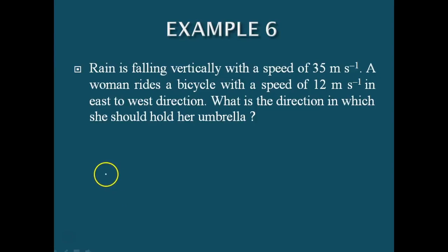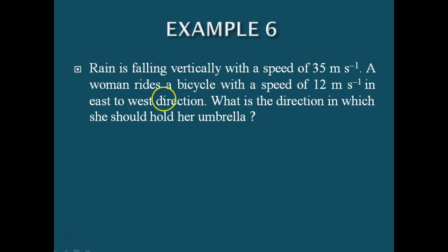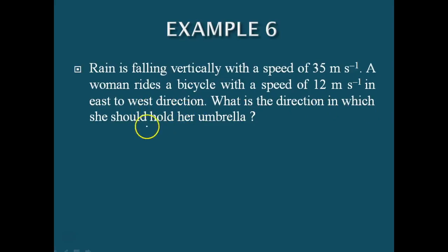Let us consider a simple problem. Rain is falling vertically with a speed of 35 meters per second. A woman rides a bicycle with a speed of 12 meters per second in the east to west direction. What is the direction in which she should hold her umbrella?